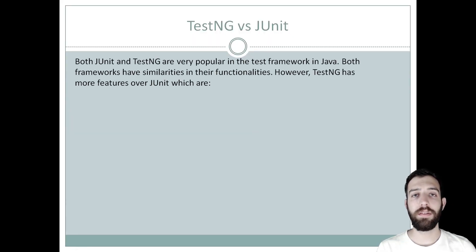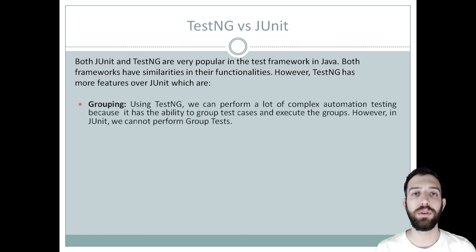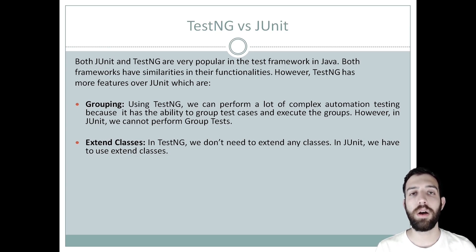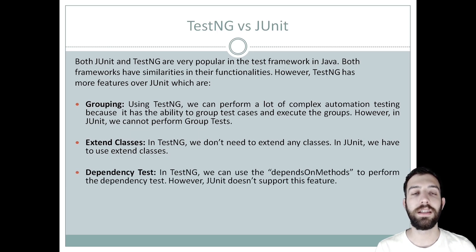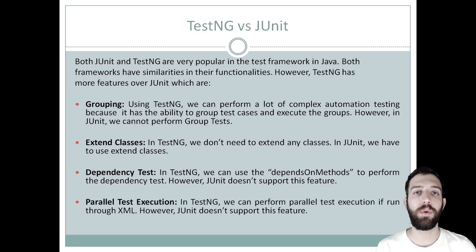Both JUnit and TestNG are very popular frameworks in Java and they have their similarities on their functionalities. However, TestNG has more features than JUnit. These are the grouping: using TestNG, we can perform a lot of complex automation testing because it has the ability to group the test cases and execute them as groups. However, in JUnit, we cannot perform group tests. Secondly, is the extend classes. In TestNG, we don't need to extend the classes. However, in JUnit, we need to extend the classes. Third, is the dependency test. In TestNG, we can use the dependsOn methods to perform the dependency tests. JUnit does not support this feature. And last is the parallel test execution. In TestNG, we can perform parallel test execution if we run the program through the XML file. However, JUnit does not support this feature.